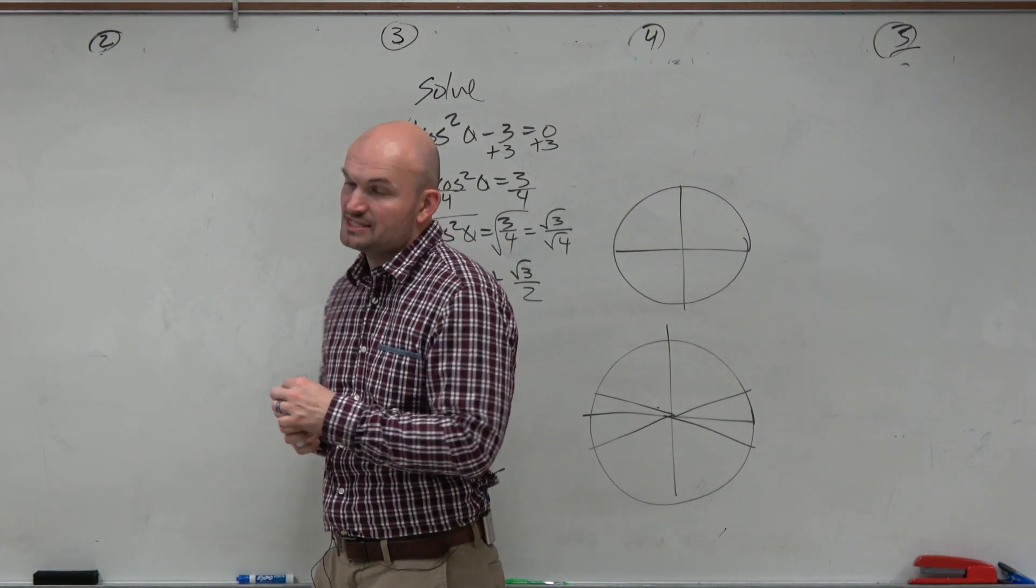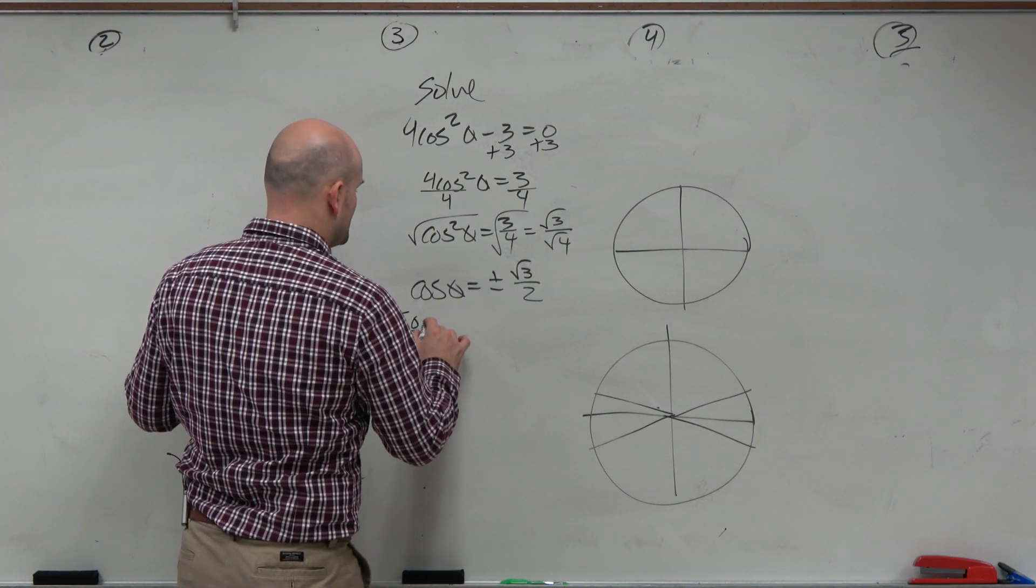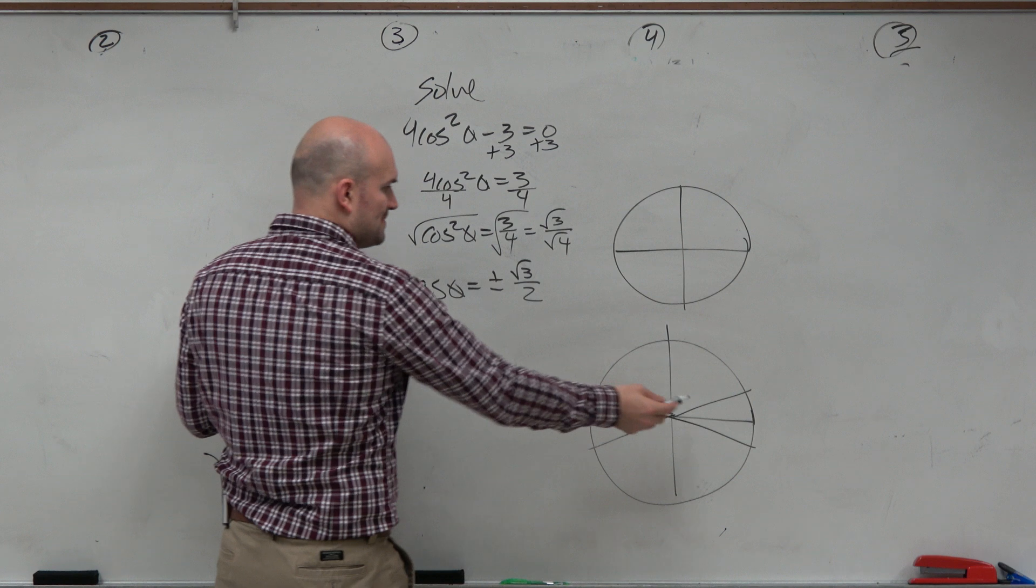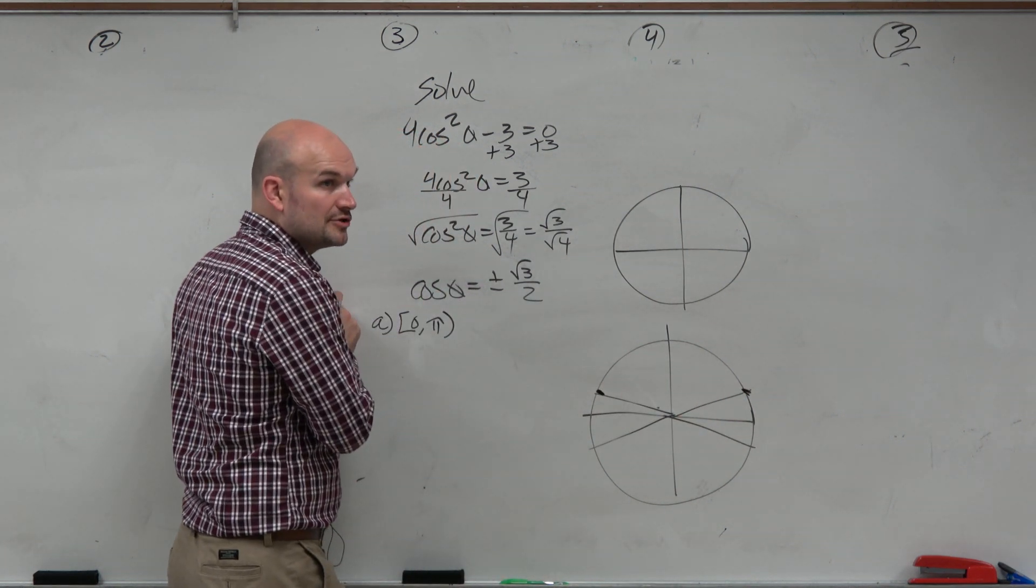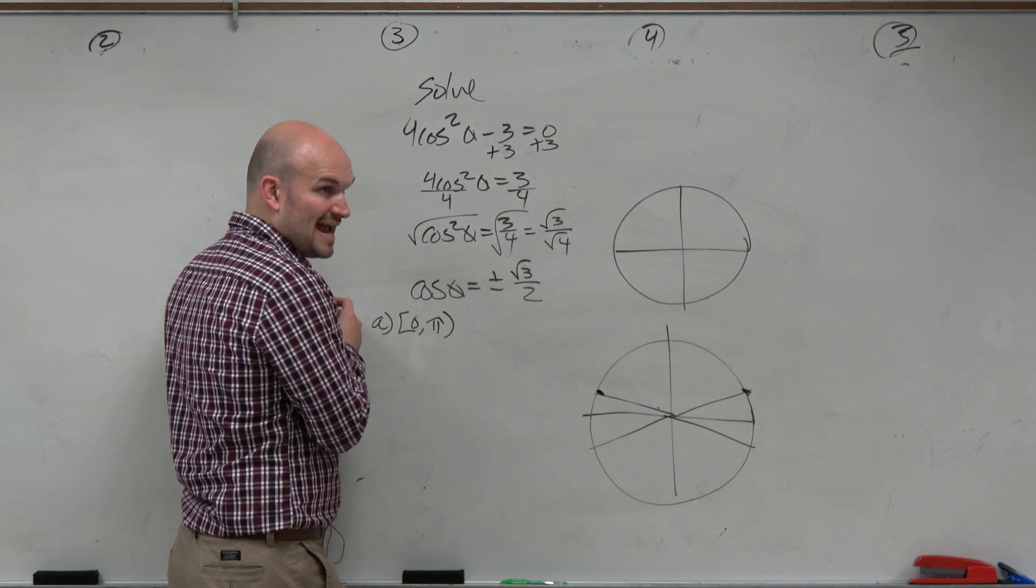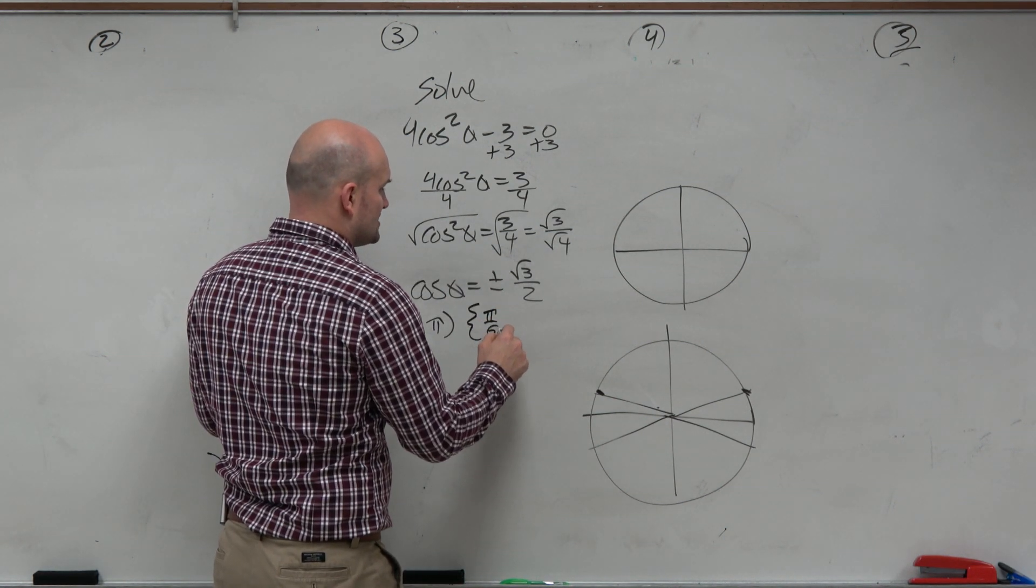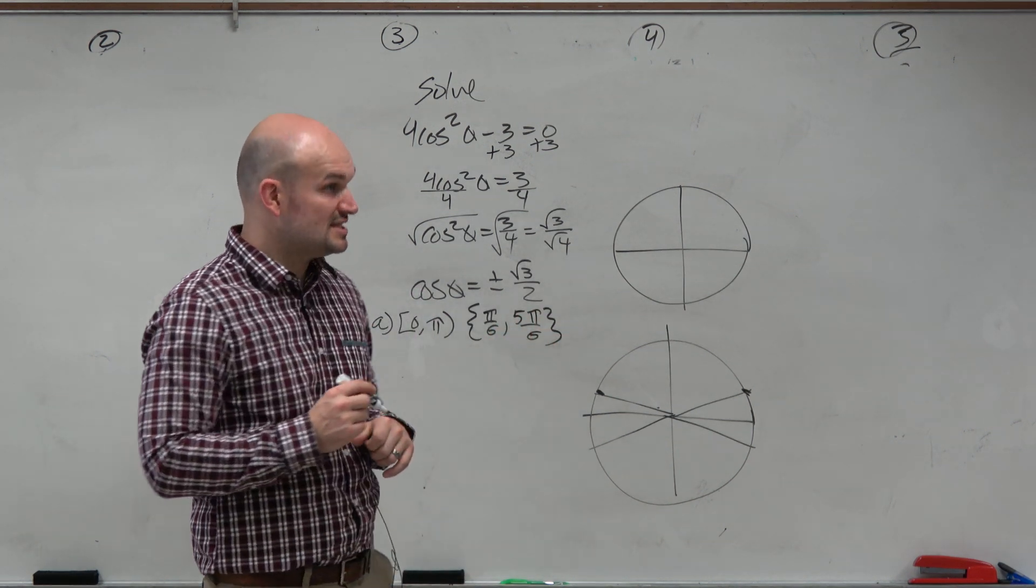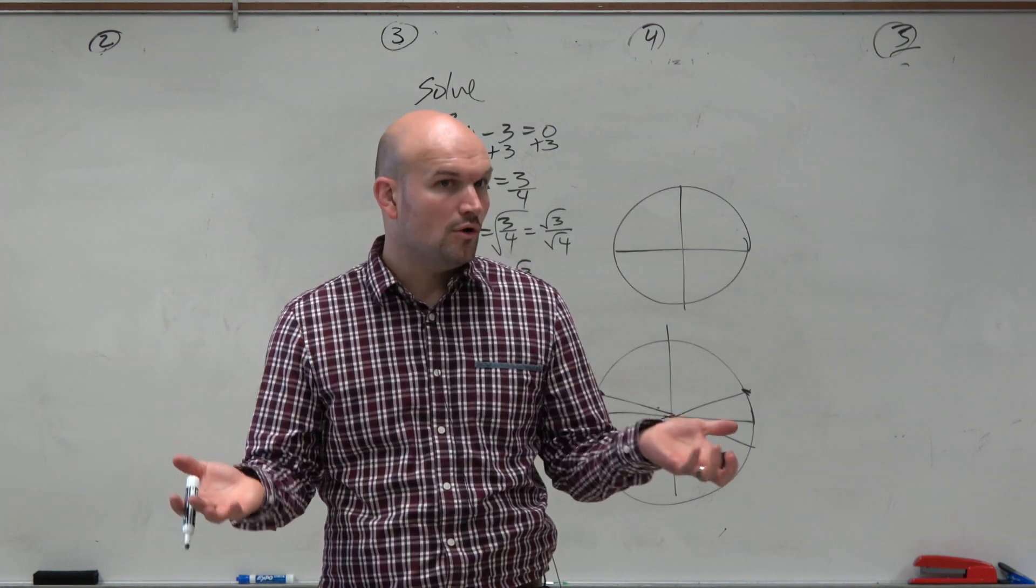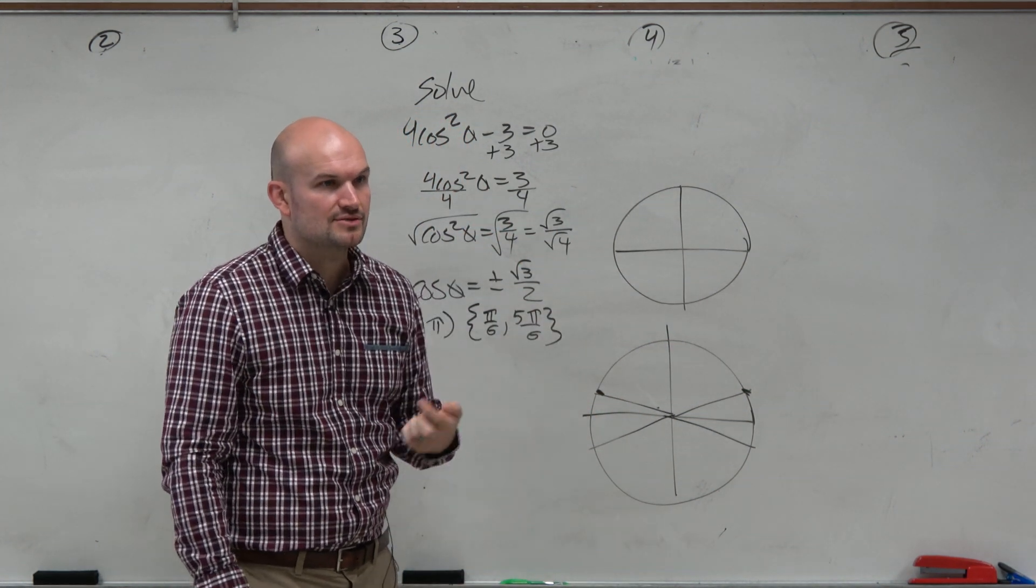Now, let's go through the intervals. The first interval is find all the solutions on the interval 0 to pi. So that's basically all my angles in the first as well as in the second quadrant, right? 0 to pi. So therefore, my answers in this case are just going to be pi over 6 and 5 pi over 6. When you're writing your solutions, you can use the solution sets when you have multiples of them. Or you could just say theta equals this, theta equals that, so on and so forth.